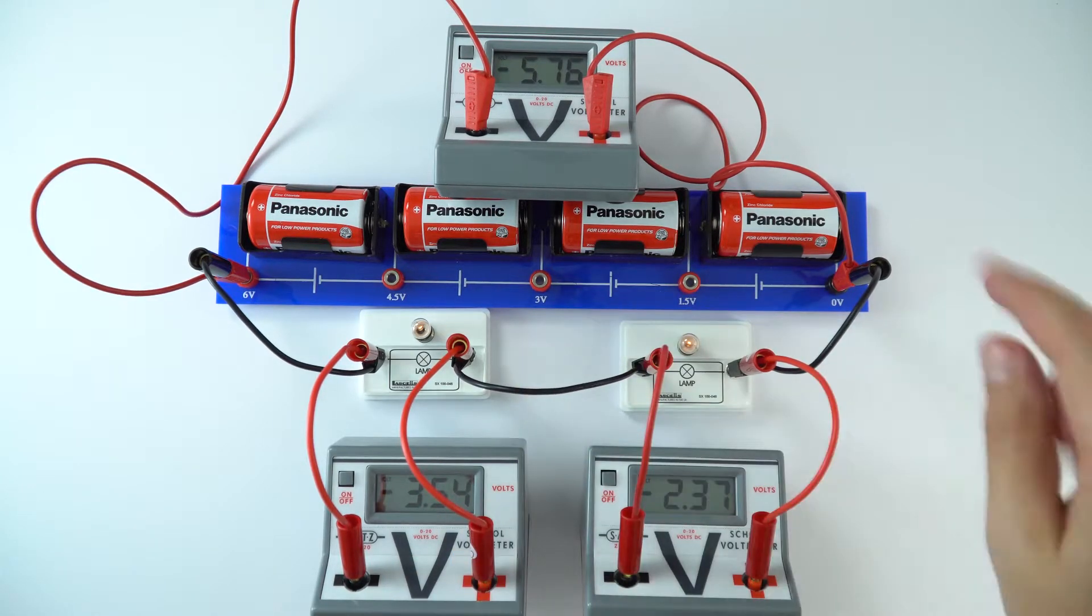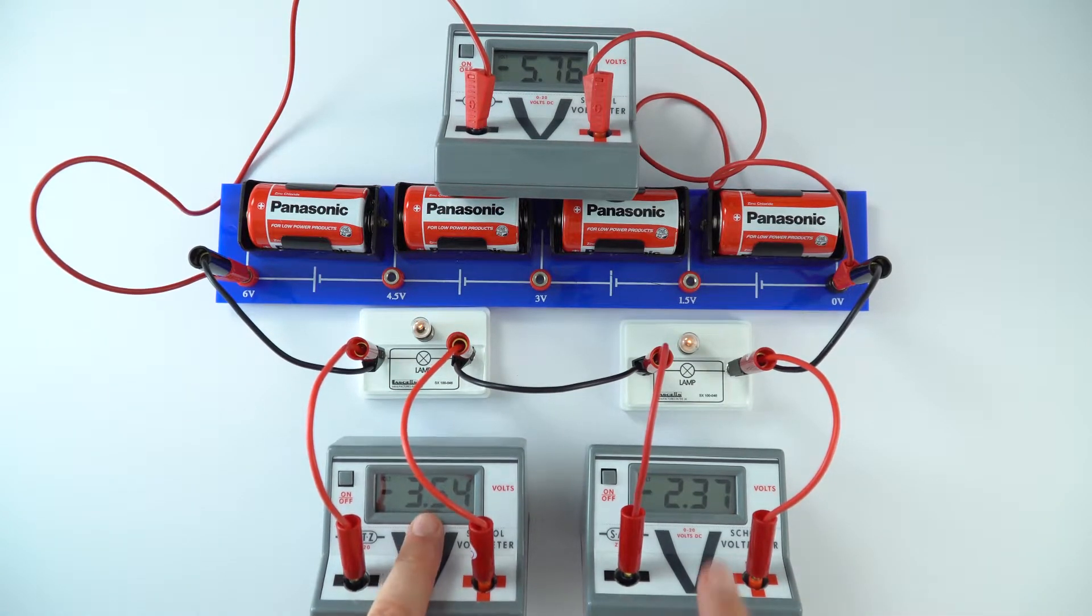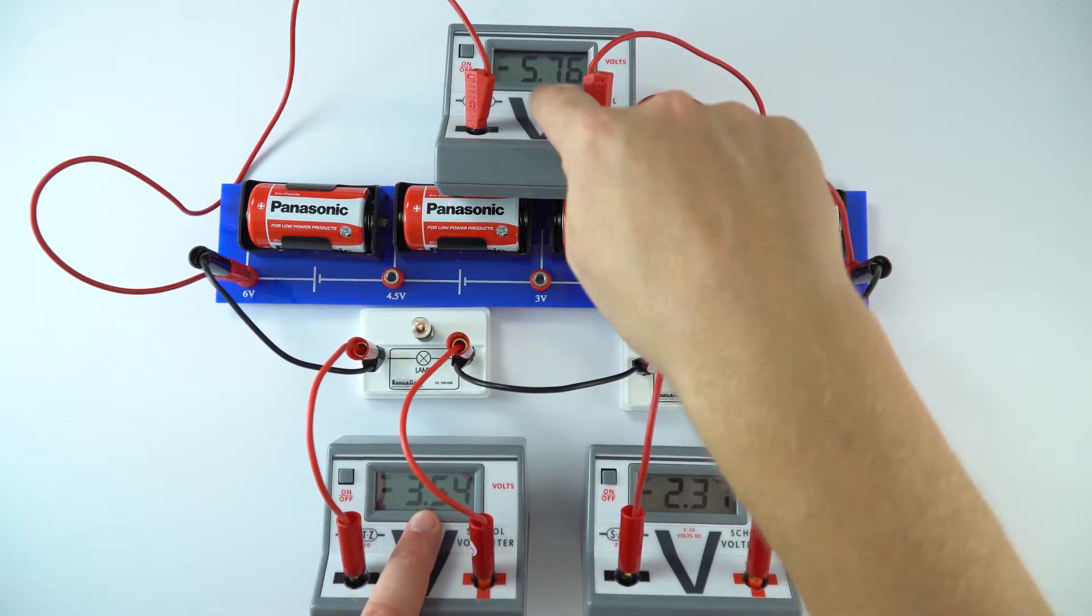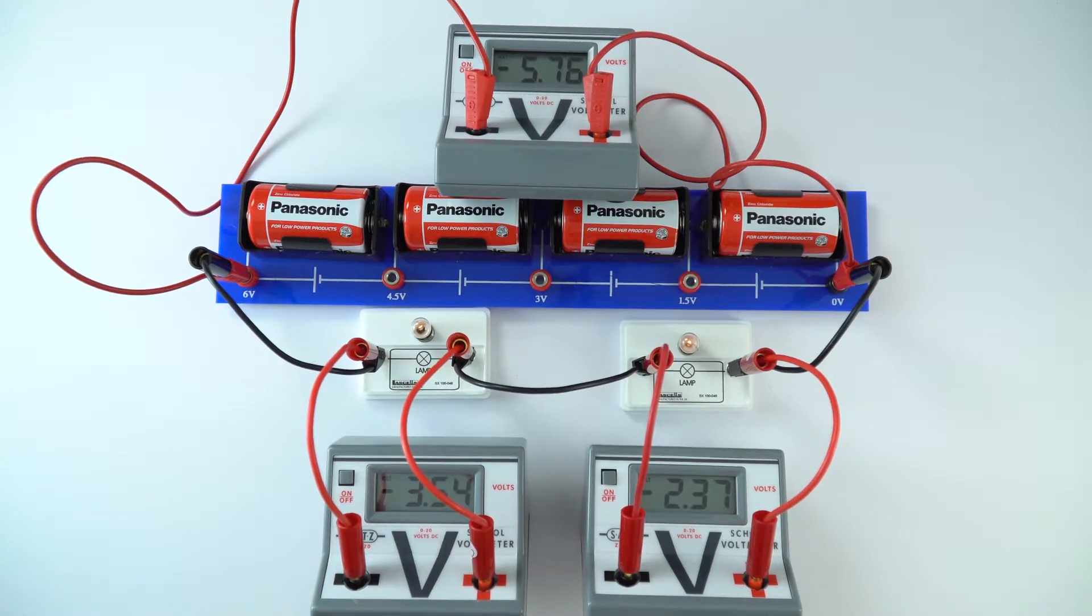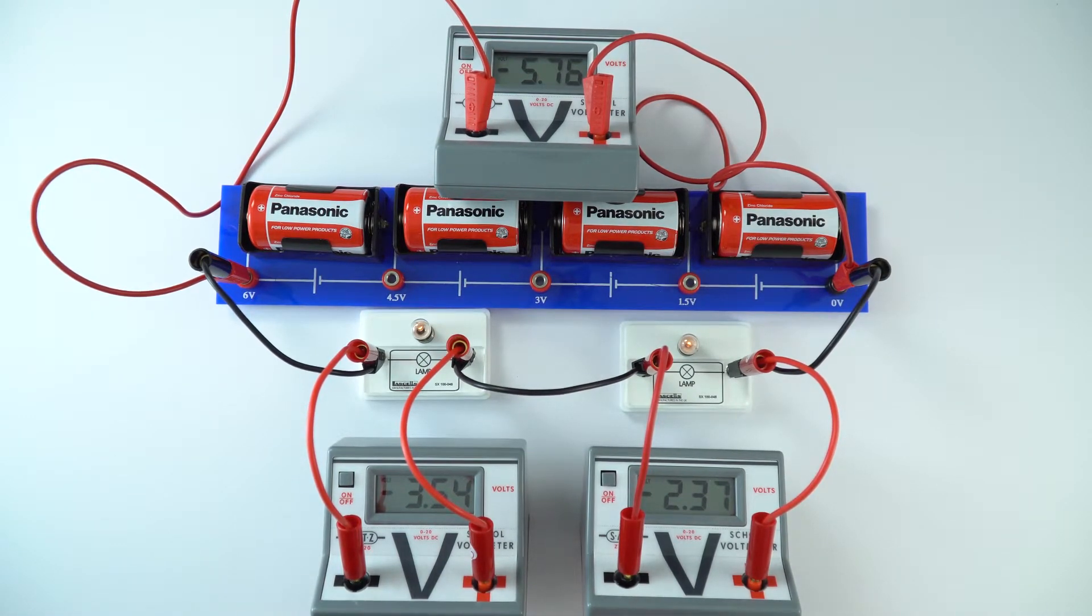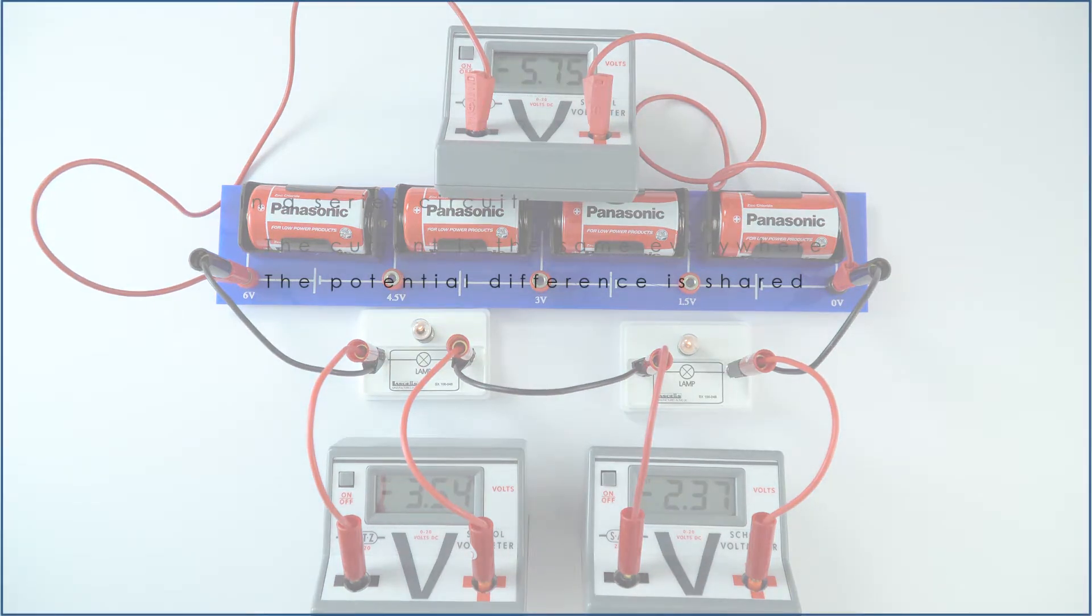So that means that these components aren't identical—they're similar—but what we're finding is that this value added to this value make this value over here. So what we find in a series circuit is that the potential difference is shared between the components.